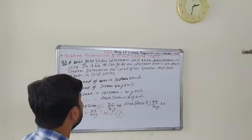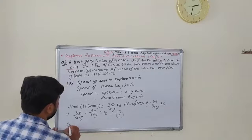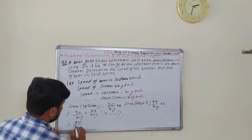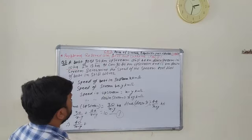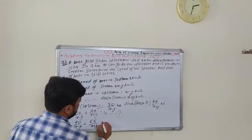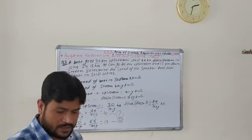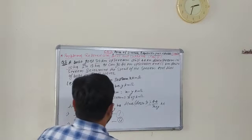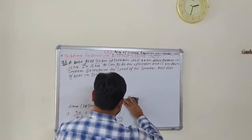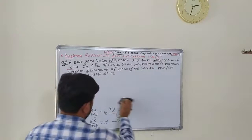Second condition: in 13 hours it goes 40 km upstream and 55 km downstream. So: 40/(y−x) + 55/(y+x) = 13. This is our second equation.